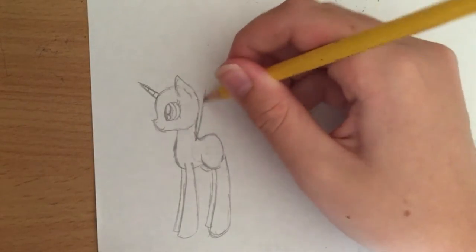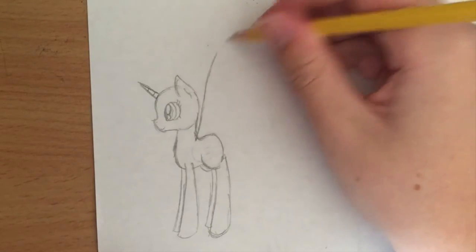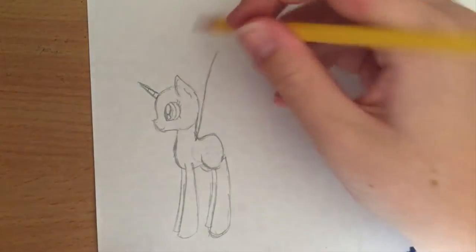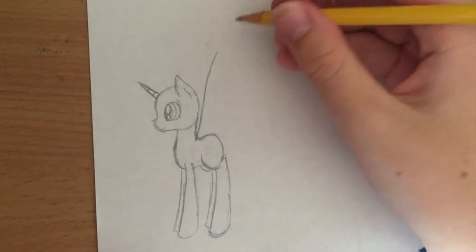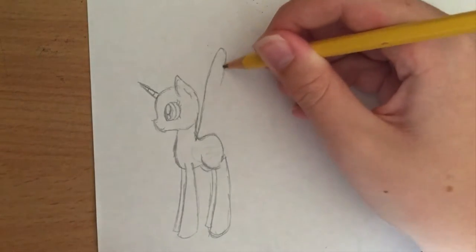And just make a line. You want to make them fairly large because they wouldn't be able to fly if they were small, so make it about, definitely above the ear, and then curve and come back down.